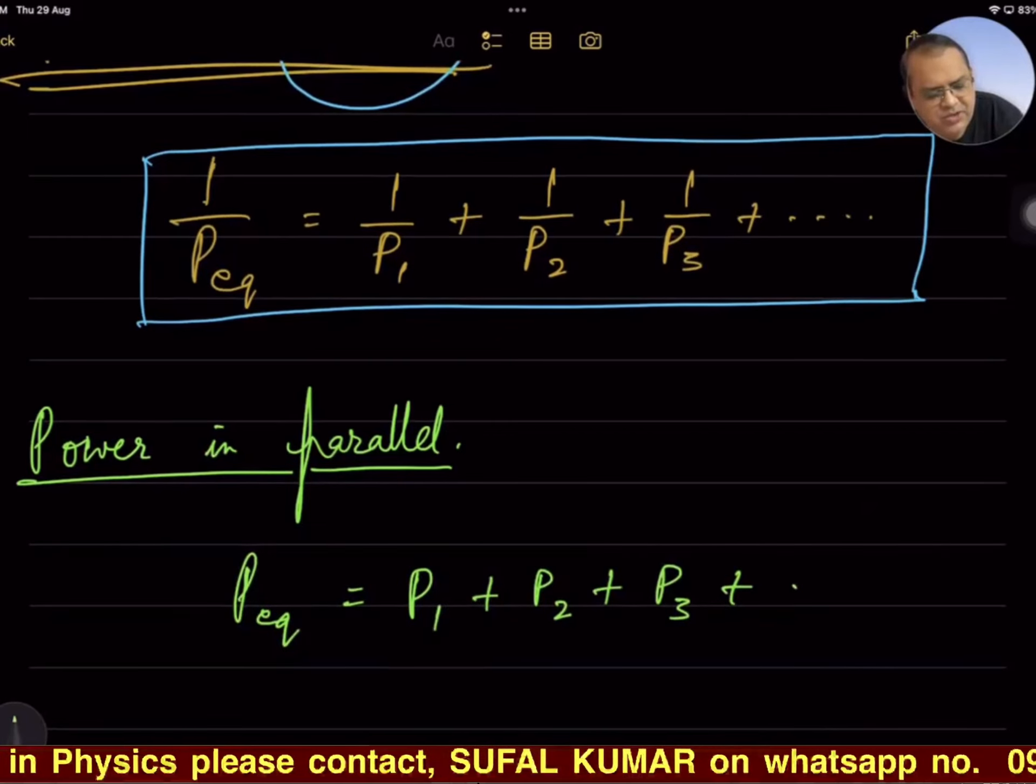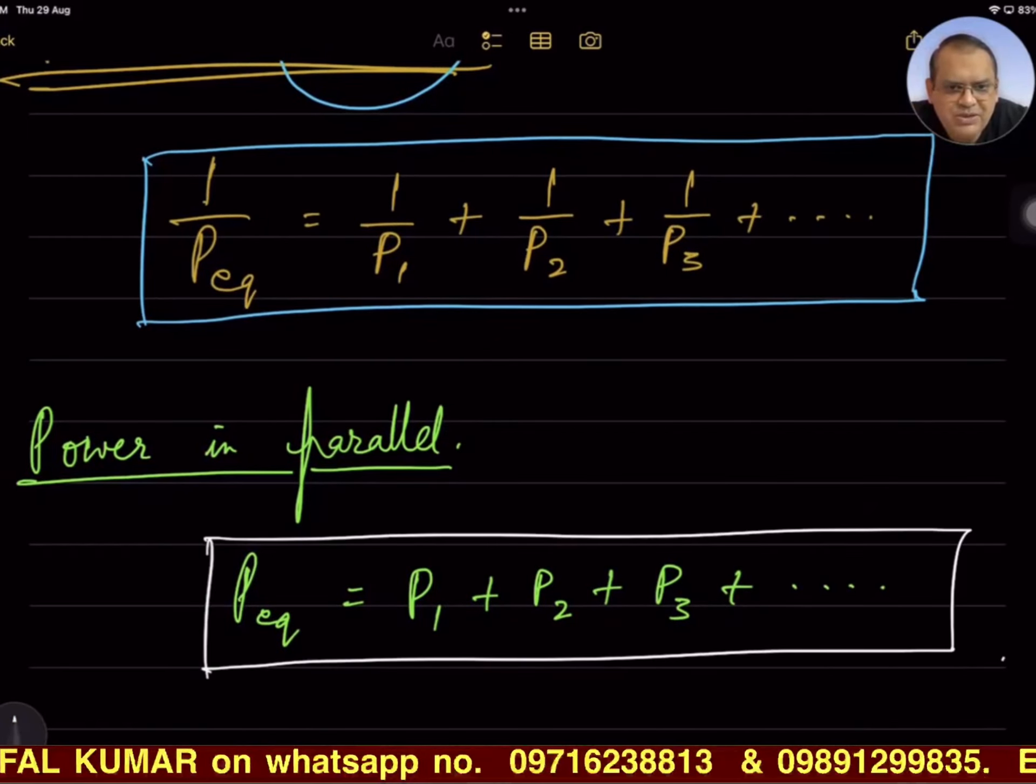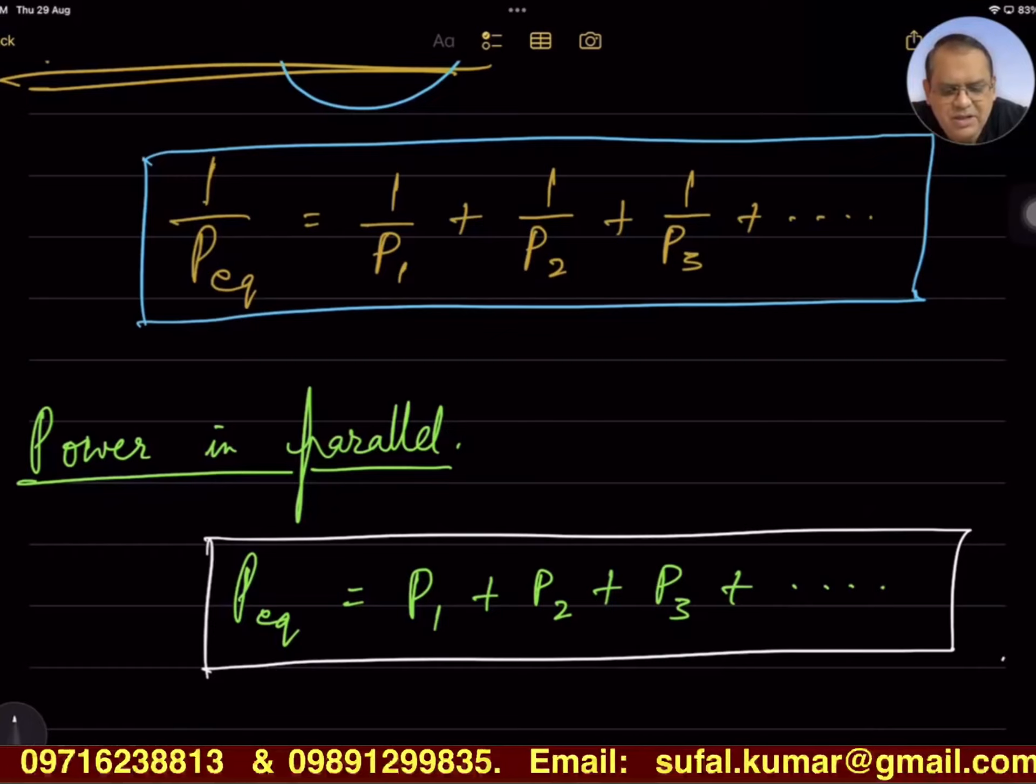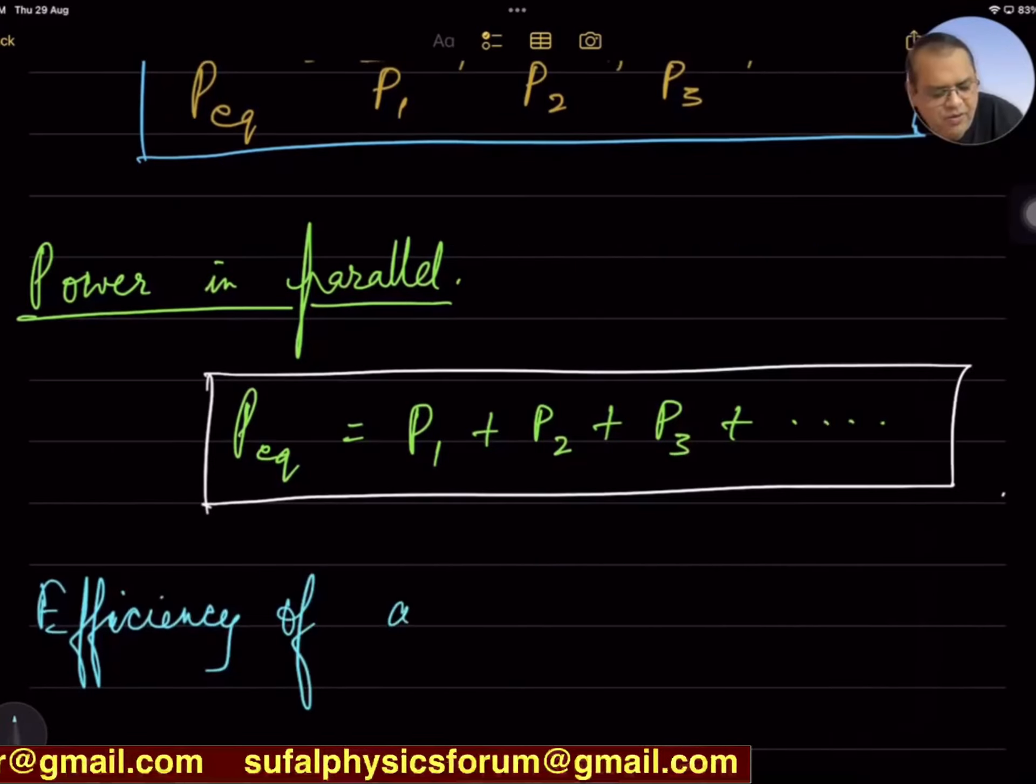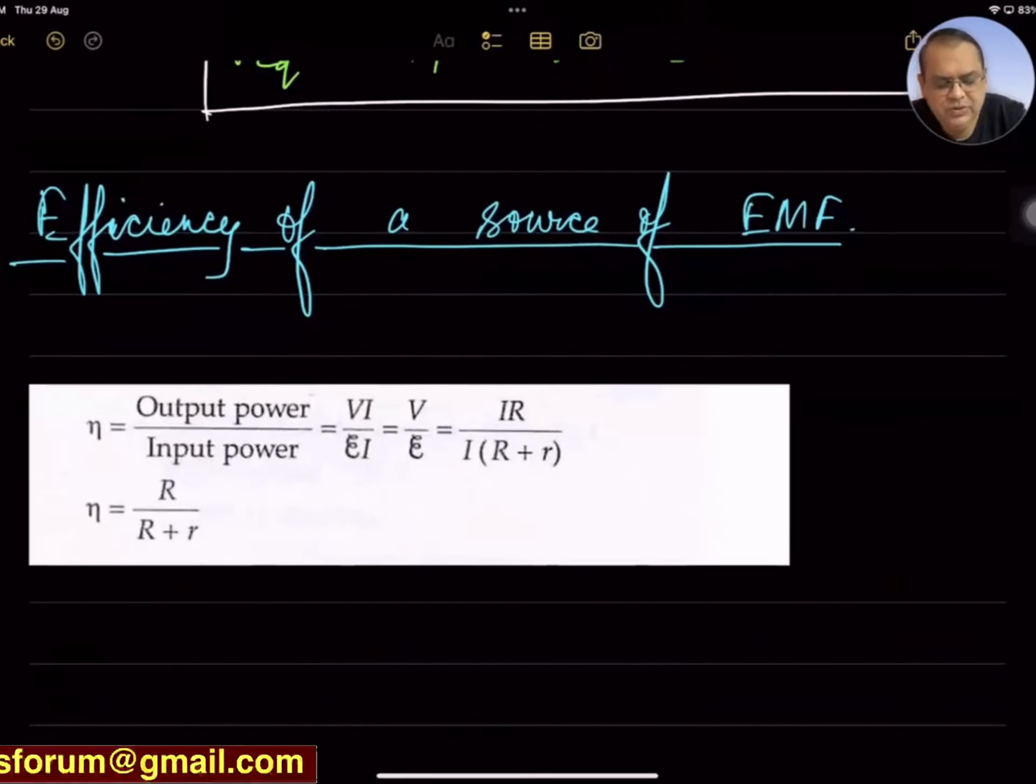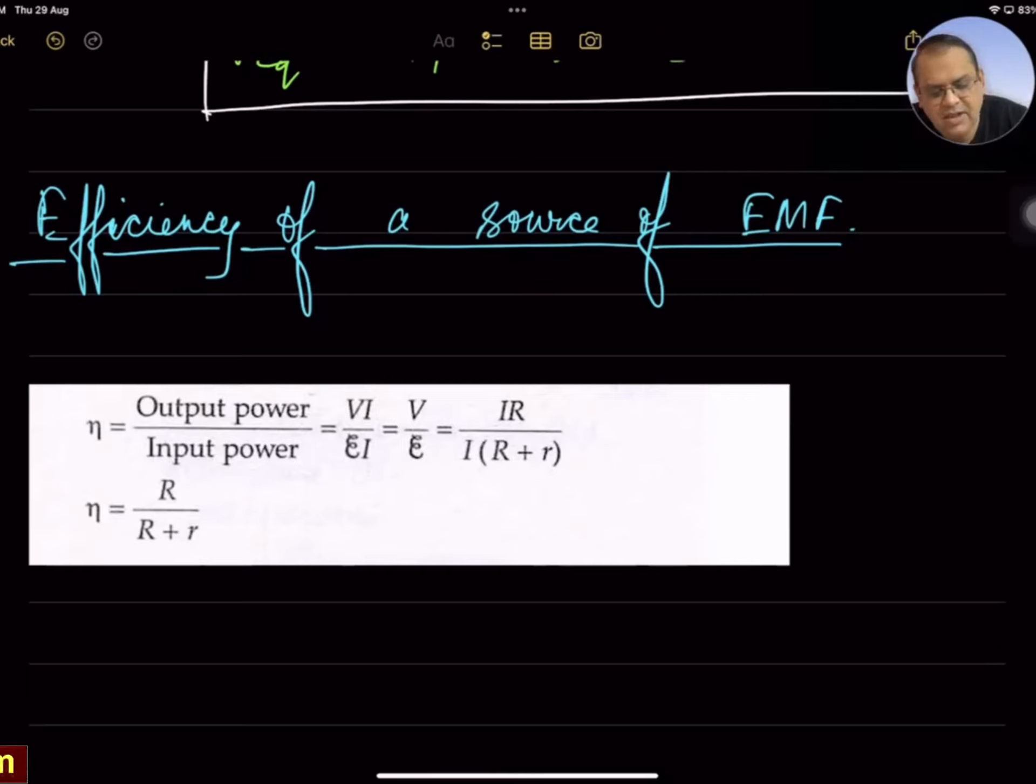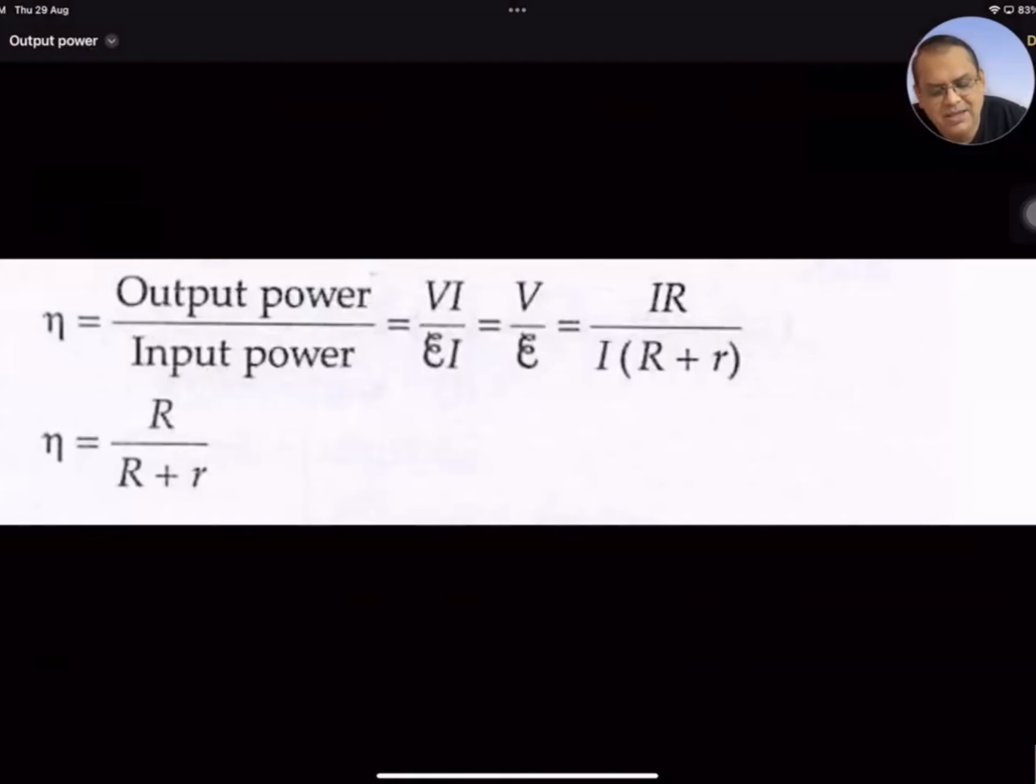Efficiency is output upon input. Output is of course VI and EI is input power.